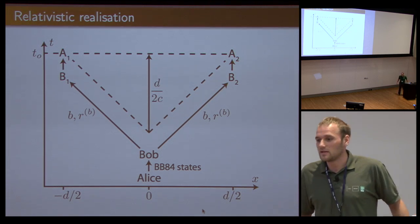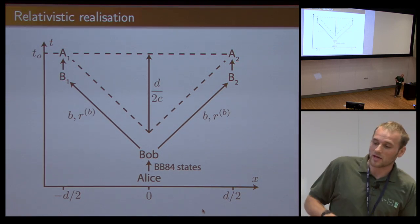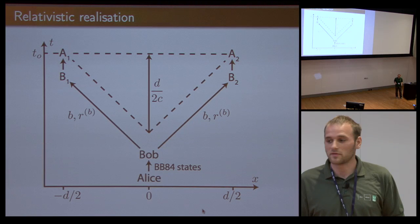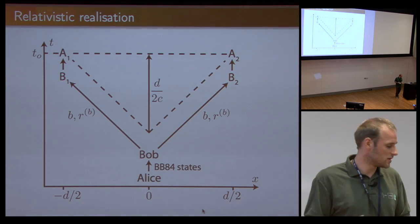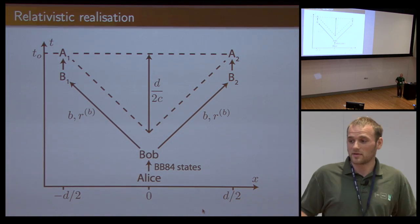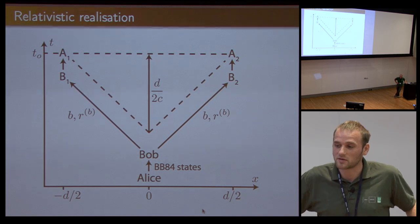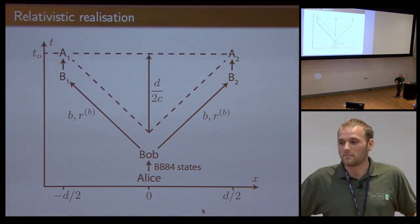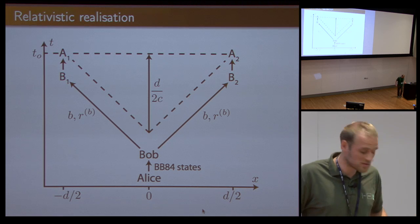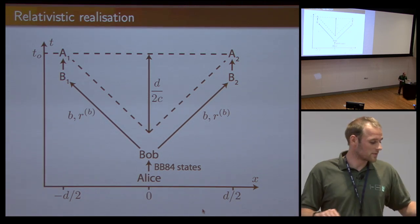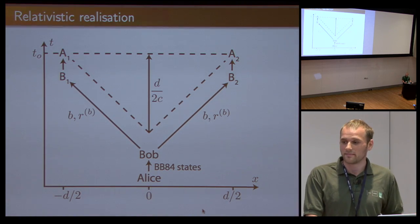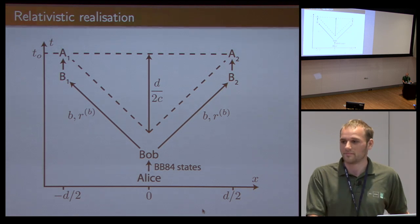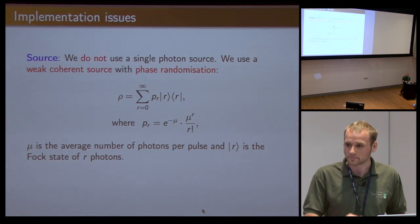How do you do it relativistically? It's very simple. You put Alice and Bob in the middle, they exchange some BB84 states, Bob measures and gets the measurement outcomes. He sends them at the speed of light to his agents who are far away. When they receive it, they just pass it on to Alice. It's all very simple. Obviously when you talk about sending things at the speed of light you might be a bit dubious, but in principle it's possible.